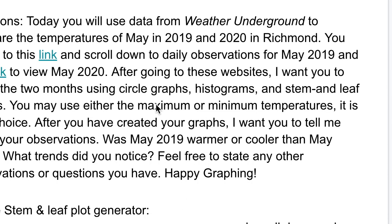Today I want you guys to make three different types of graphs. I was going to have you do a line plot but that's kind of hard to do on the computer, so I just need a histogram, a stem and leaf, and a circle graph. The directions: today you will use data from Weather Underground to compare the temperatures of May in 2019 and in 2020 in Richmond. You'll go to a link, scroll down to the daily observations for May 2019, then click to view May 2020. After going to these websites, graph for the two months using circle graphs, histograms, and stem and leaf plots. You may use either the maximum, minimum, or average temperatures - it is your choice.